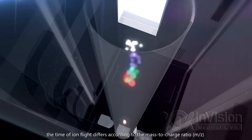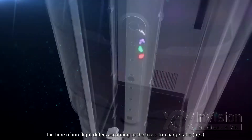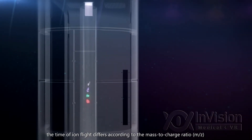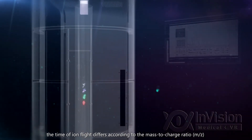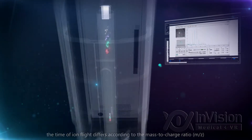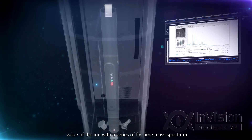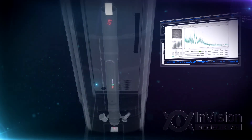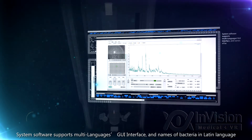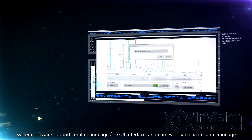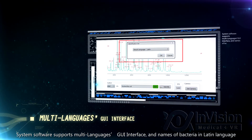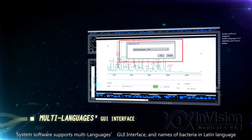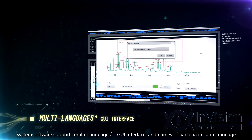consequently, the time of ion flight differs according to the mass-to-charge ratio, M/Z value of the ion, producing a series of flight-time mass spectra. System software supports a multi-language GUI interface and names of bacteria in Latin language.